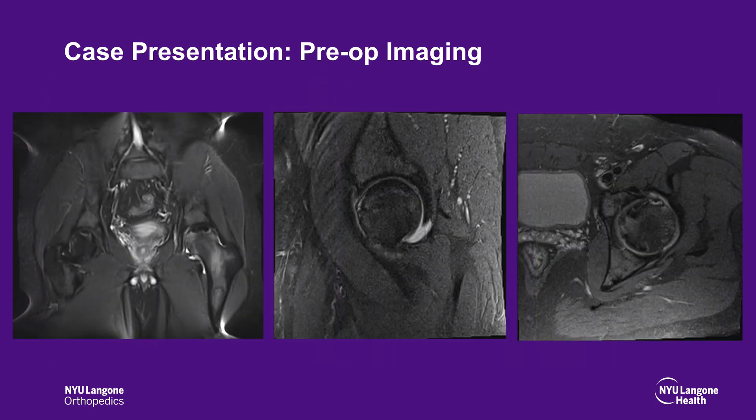MRI demonstrated avascular necrosis of both femoral heads, with extensive marrow edema in the left femoral head extending into the proximal shaft. In the left hip, there is AVN underlying the articular surface anteriorly and centrally, 3.7 by 3.7 cm in size and 1 cm in depth. Additionally, an anterior labral tear can be seen.